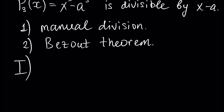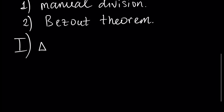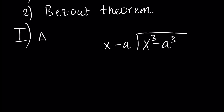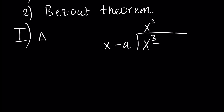Let's prove it first by manual division. We divide x cubed minus a cubed by x minus a, and we will show that the remainder of this division is equal to zero. We write our polynomial as x cubed plus zero x squared plus zero x minus a to the power three.